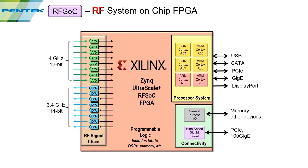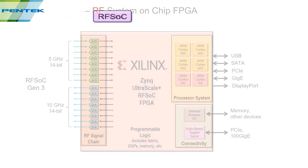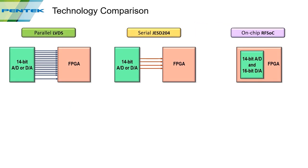The Gen 3 parts introduced last year upgrade the ADCs to 5 GHz with 14 bits, and the DACs are now up to 10 GHz. Let's compare the different technologies and look at how each affects your choice of converters when considering PCB design, data path latency, physical size, power consumption, and cost.